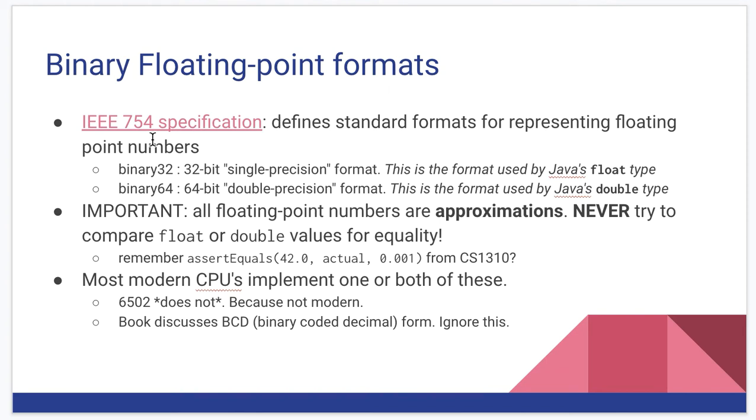So the binary floating point formats are given by the IEEE 754 specification. IEEE is the Institute for Electrical and Electronic Engineers that made the specification. Pretty much every modern programming language implements it to some form or some extent. And most modern computer processors and even graphics processors will implement either binary 32 and or binary 64 natively. So binary 32 is the 32-bit, what we call the single precision format, and this is the one that is used by Java's float type. Binary 64 is the 64-bit version, and so because of that, because it's double 32, we call that the double precision format. And this is what a Java double is. If you've been wondering since 1301 why we call our floating point types double, now you know why. It is the double precision version of a floating point.